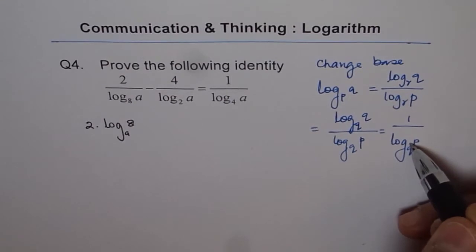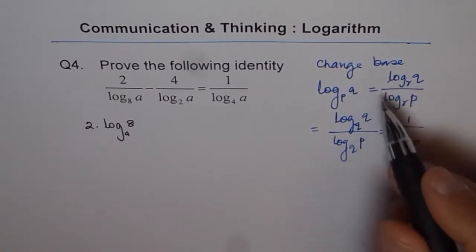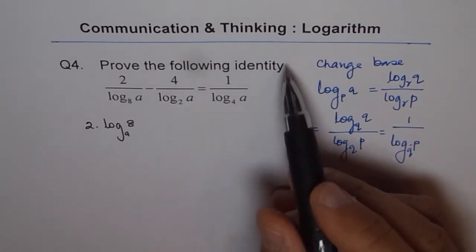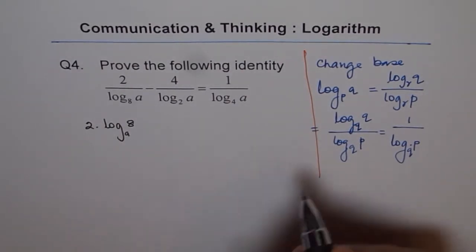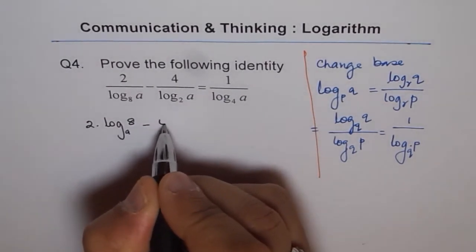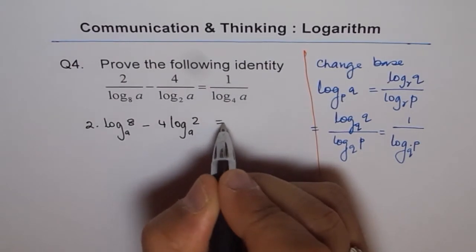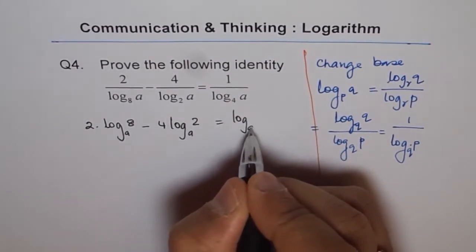So that is a huge application of change of base which we are going to apply here to prove this identity. So I hope you understand and appreciate this part of change of base. Let's continue applying this for the second term. So it is minus 4 and we can write this as log to the base A of 2. And the right side therefore becomes 1 times log to the base A of 4.